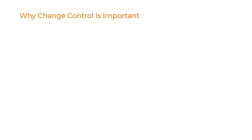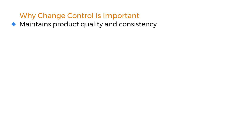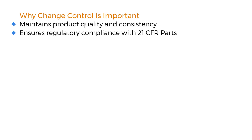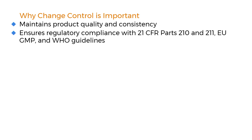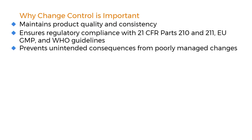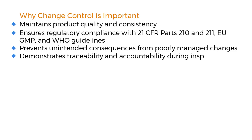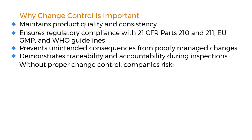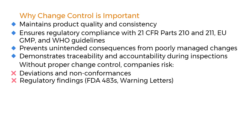Why is change control important? A robust change control system maintains product quality and consistency, ensures regulatory compliance with 21 CFR parts 210 and 211, EU GMP, and WHO guidelines, prevents unintended consequences from poorly managed changes, and demonstrates traceability and accountability during inspections. Without proper change control, companies risk deviations, non-conformances, regulatory findings, FDA 483s and warning letters, product recalls, and patient safety issues.